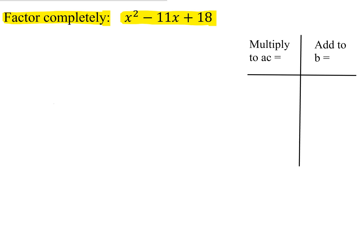Remember, the first thing you should do in any factoring problem is decide, is there a greatest common factor? Well, we have x squared minus 11x plus 18. They have no numbers in common, no x's in common, therefore I cannot pull out a GCF. So I'm going to factor using the AC method.